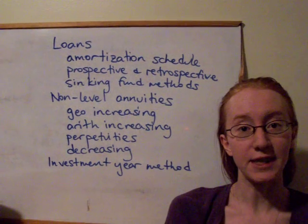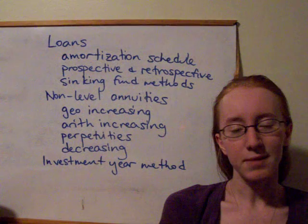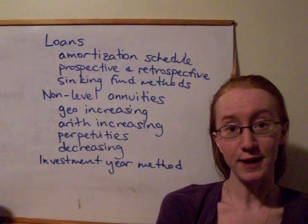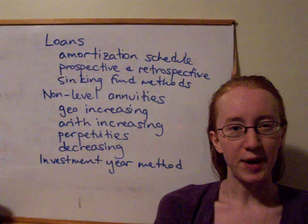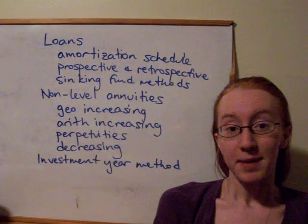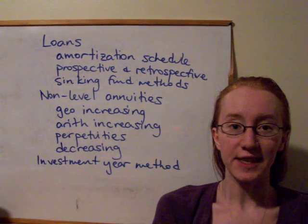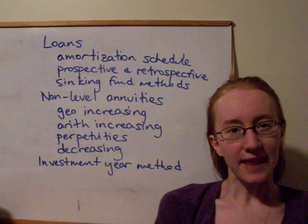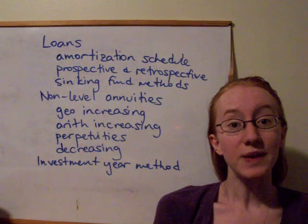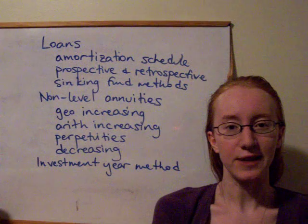If we have arithmetically increasing payments, we need to do a little bit of a trick — either multiply or divide through the entire series by v, and then subtract them from one another, and then we'll get a series that we know how to sum. Because in that case we end up with a geometric series with increasing coefficients. Using that approach, we developed this whole set of new annuity symbols which work for increasing annuities.